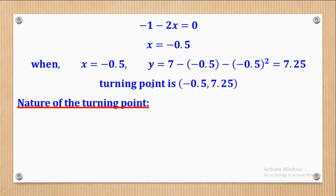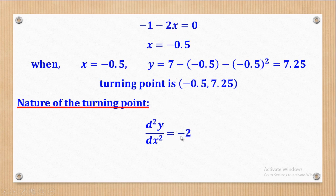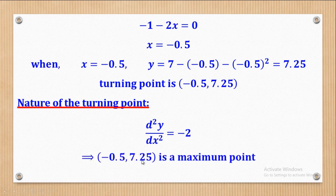Now that I've got the turning point, I have to get its nature — is it a maximum, minimum, or point of inflection? I need to get the second derivative. The first derivative was -1 - 2x, so the second derivative will be -2. This is a negative value, therefore the turning point is a maximum point.